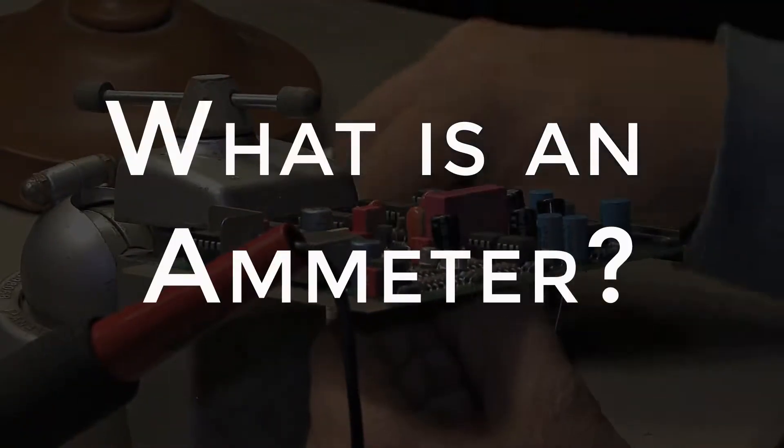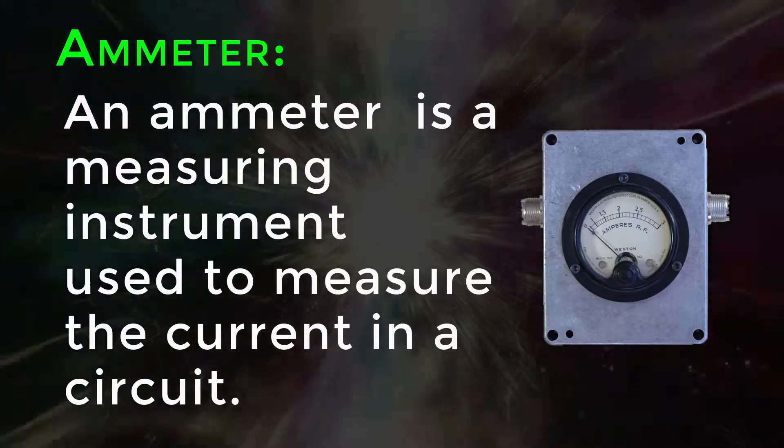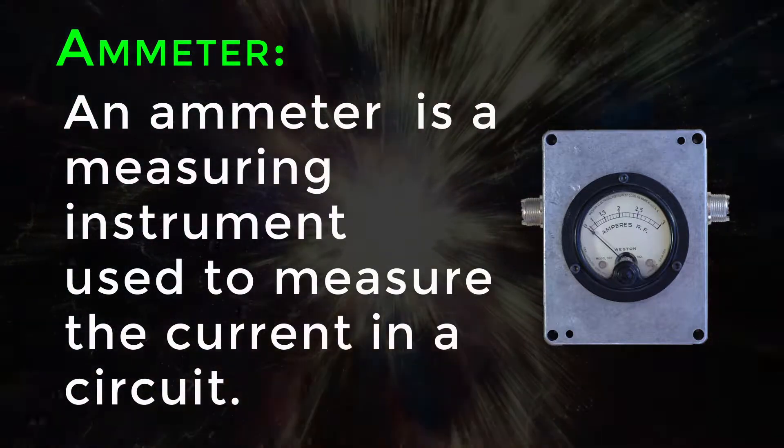What is Ammeter? An ammeter, from ampere meter, is a measuring instrument used to measure the current in a circuit.